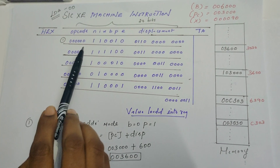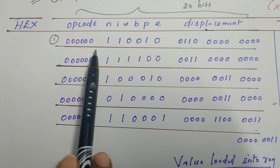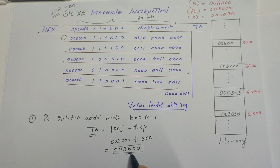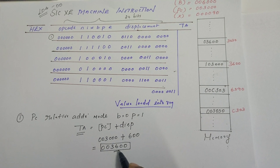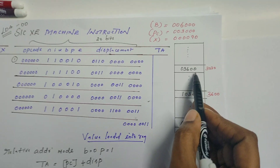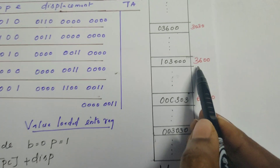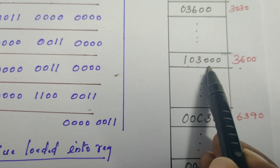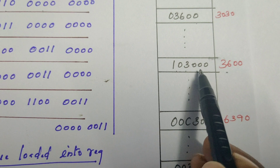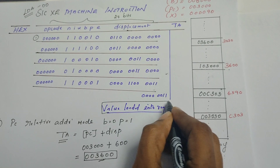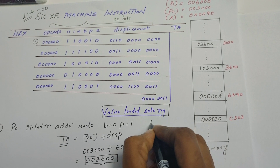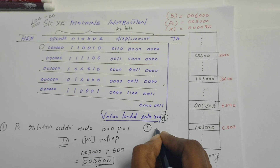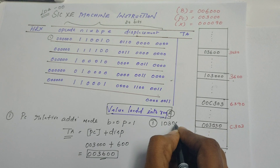The instruction is LDA (Load Accumulator), and the target memory location is 0x3600. The data available at memory location 0x3600 is 0x10300. Therefore, for the first instruction, the value loaded into the accumulator (register A) is 0x103000.